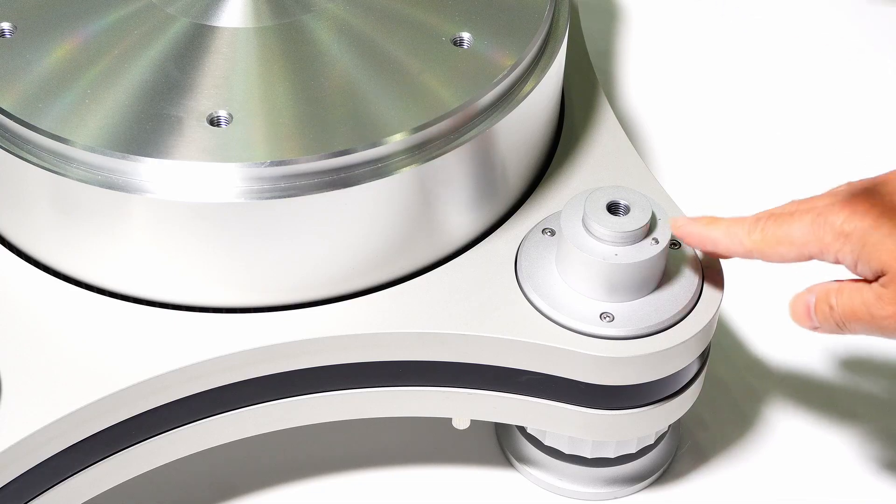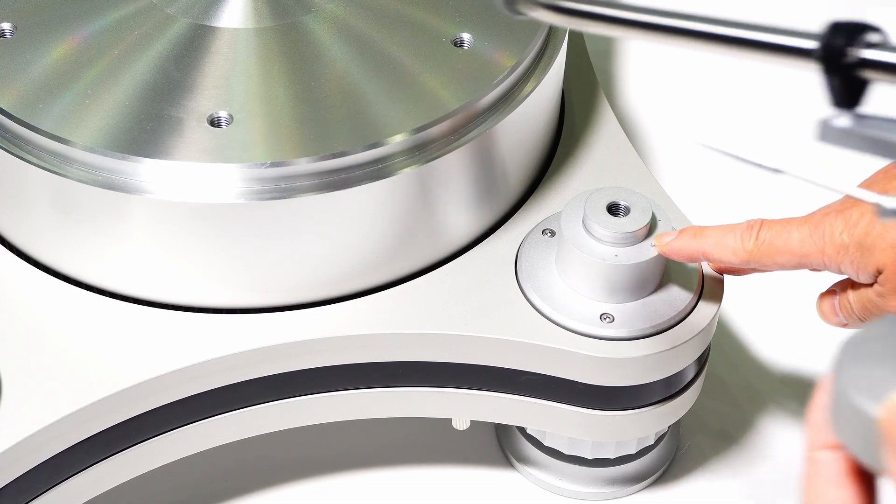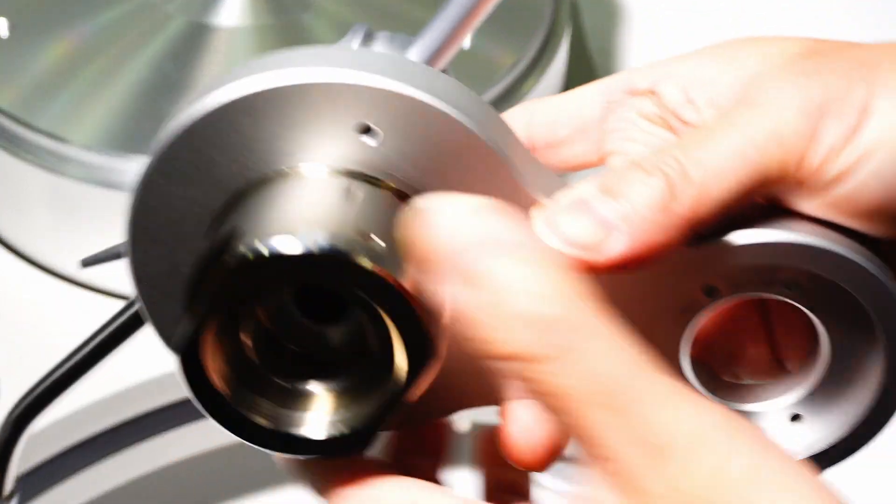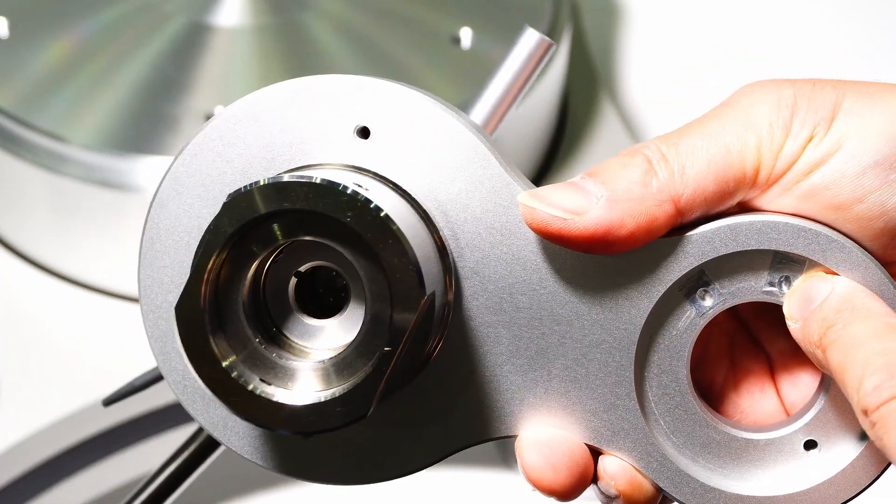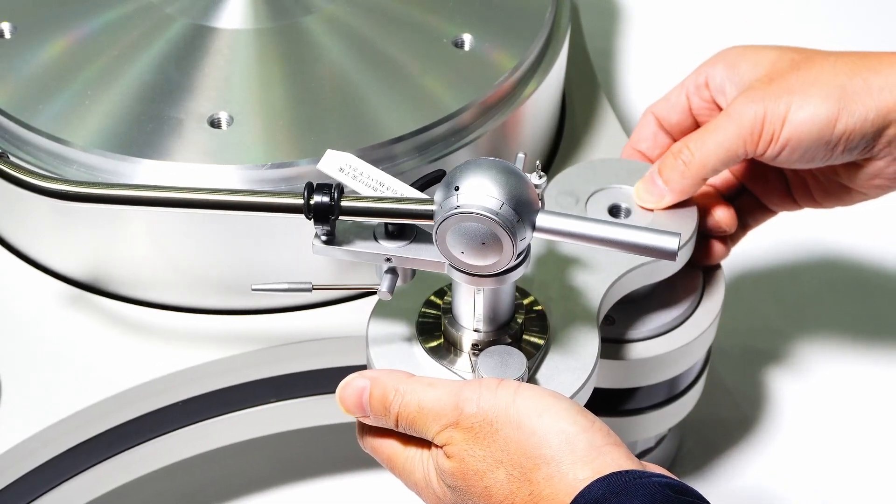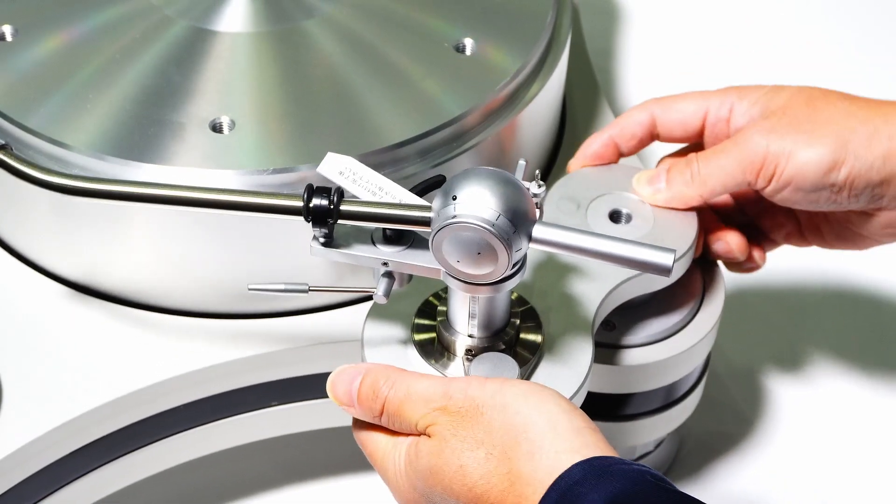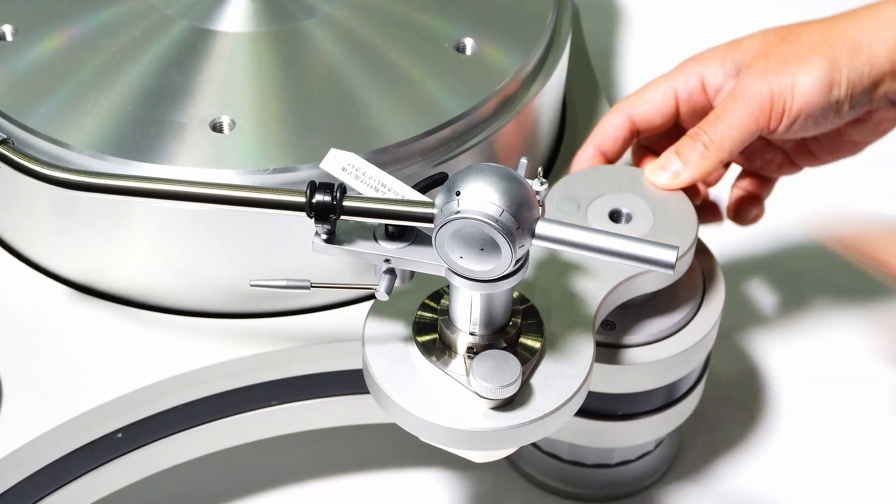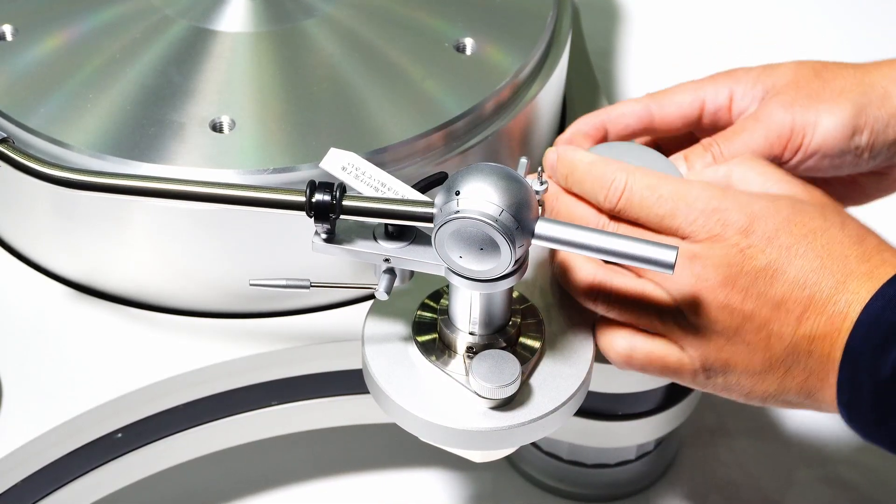On the top of the post, there is a small pin. There are two positioning indentations on the back of the arm board. Align these two points together and tighten the thumb screw.